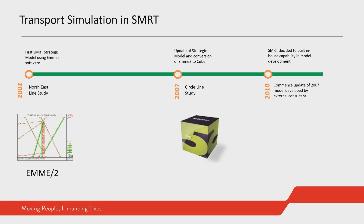Our journey began in 2002. The first model we had in SMRT was actually MV2 and not CUBE. We needed a strategic model to evaluate the impact of the office time. At that moment, the planning team did not have the capability to build a strategic model of Singapore, so we engaged an external consultant to develop the first strategic model for the company. Five years later in 2007, we realized the model needed to be upgraded because the model accuracy was really not up to expectation. Another consultancy was called to build a model, and at that time we decided to change the software from ME2 to CUBE.